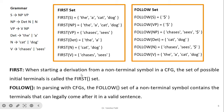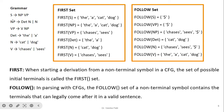The definition: when starting a derivation from a non-terminal symbol in a CFG, the set of all possible initial terminals is called the first set. For the follow set in parsing with a CFG, the follow set of a non-terminal symbol contains the terminals that can legally come after it in a valid sentence. Depending on the condition, we take either the first or follow set.